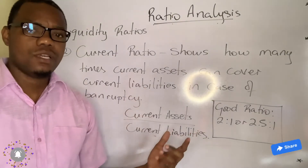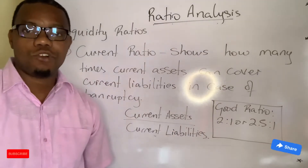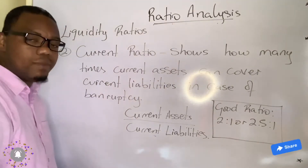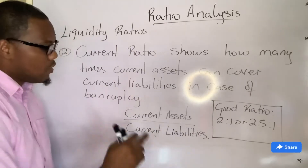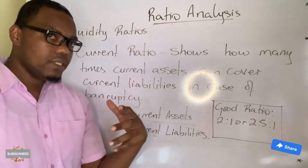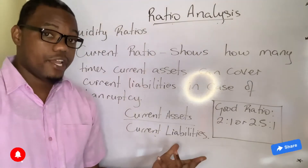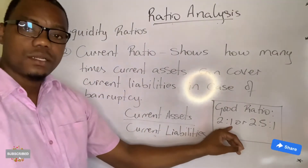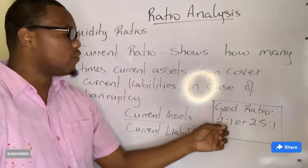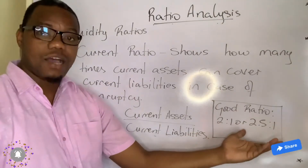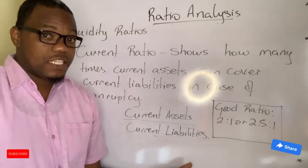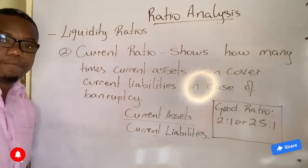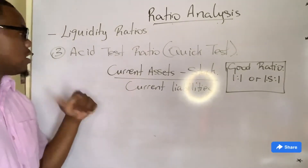You need to ensure the current ratio is a good ratio, just in the event of bankruptcy. The formula for the current ratio is extremely simple — current assets divided by current liabilities. The answer is given in ratio form. For example, a good current ratio is 2:1 or 2.5:1, meaning your assets are able to cover your liabilities two or two and a half times. That way, in case of bankruptcy, you don't need to use personal belongings to cover the debt.